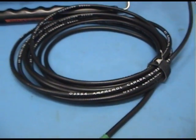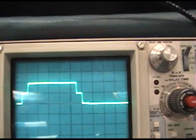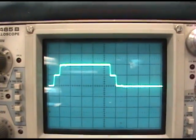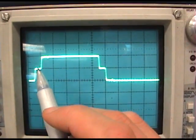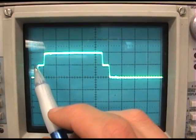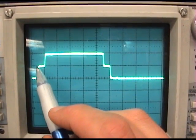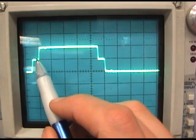Now, we can actually determine the length of the cable by using a calculation. And in the calculation, we need to know the time from the rising edge of the incident pulse to the time that we see the reflection.